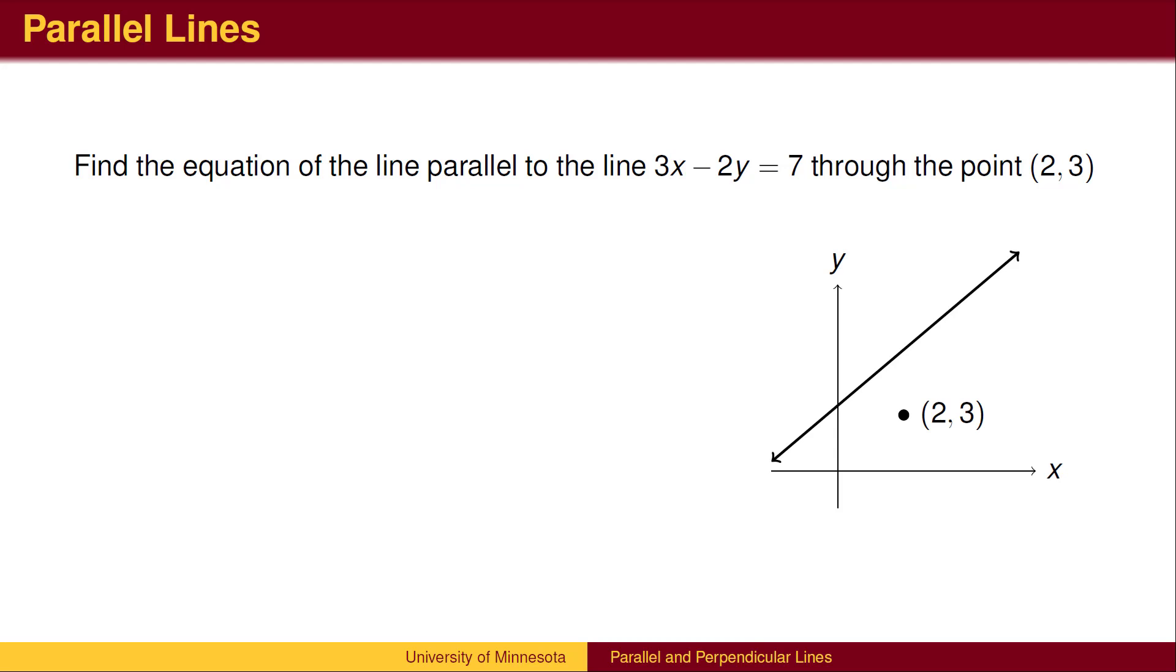we need to find the slope of the given line. The equation is not in one of our common forms, but we can rewrite it in slope-intercept form. Solving the equation of the line for the variable y, we get the slope-intercept form. If we take the second equation and divide everything by 2, we get y equals 3 halves x minus some number.